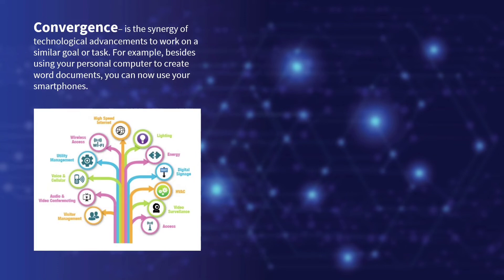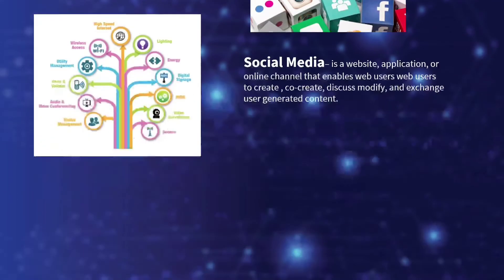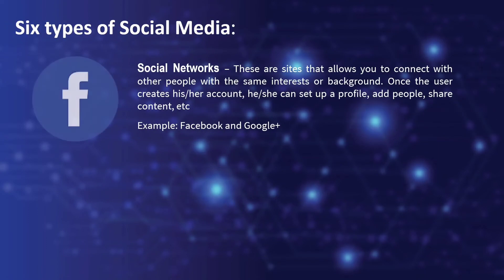Social media is a website, application, or online channel that enables web users to create, discuss, modify, and exchange user-generated content. There are six types of social media. The first is the social network — these are sites that allow you to connect with other people with the same interests or background. Once a user creates an account, they can set up a profile, share content, and more. Examples include Facebook and Google.